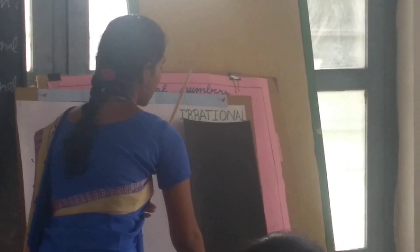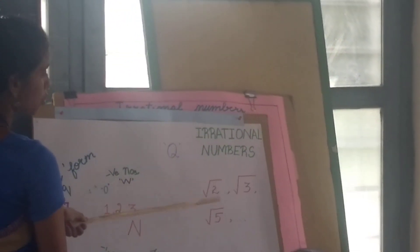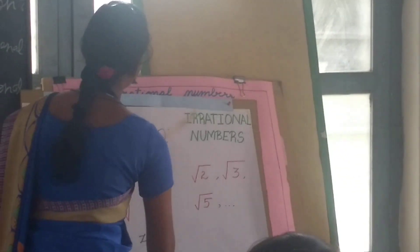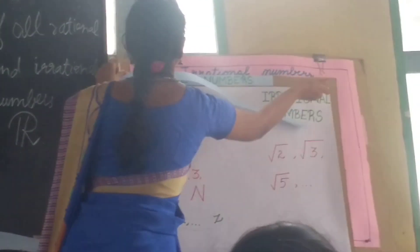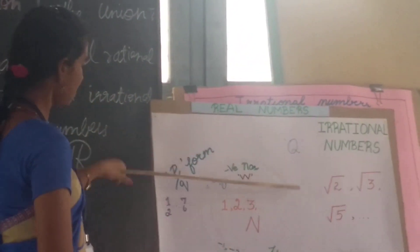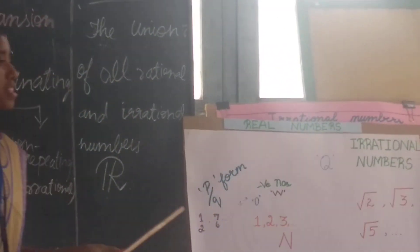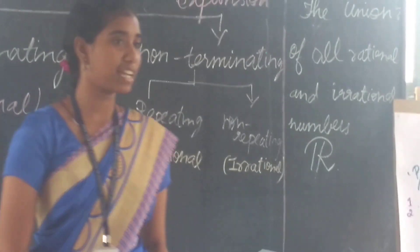Root 2, root 3, root 5, etc. So all these are known as real numbers. If students today learned about real numbers, in the next class, we learn the properties of real numbers. Thanks. Bye-bye.